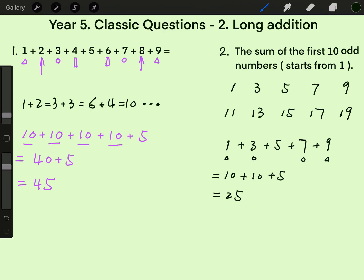And then 11 plus 13 plus 15 plus 17 plus 19. It can be written as 1 plus 10, and then plus 3 plus 10, and then plus 5 plus 10, plus 7 plus 10, and plus 9 plus 10.